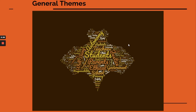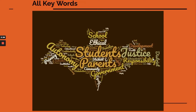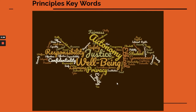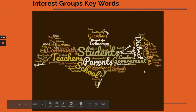So the first thing I did was a word cloud of general themes. All the keywords are here. Looking at the principles that people were listing, you can see that well-being, justice, autonomy, and responsibility were some of the main keywords that came up.